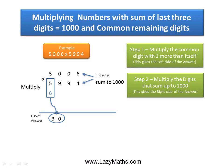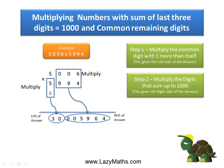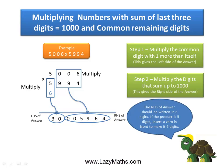Then we multiply the 6 and 994 which are the digits that add up to 1000 together. So 6 times 994 gives us 5964 and this becomes the right hand side of the answer.